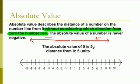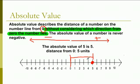The absolute value of 5 is 5. Here's 5 on our number line. Absolute value describes the distance of a number on a number line from zero, so you always start at zero. From zero we go to five — one, two, three, four, five points. So the absolute value of five is five because it's five points away from zero.